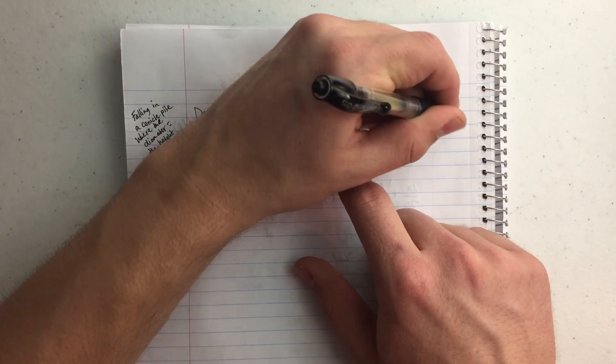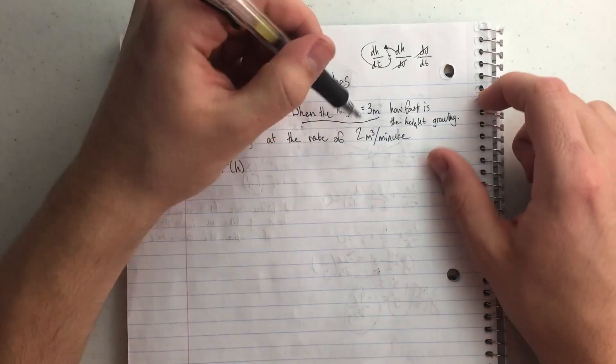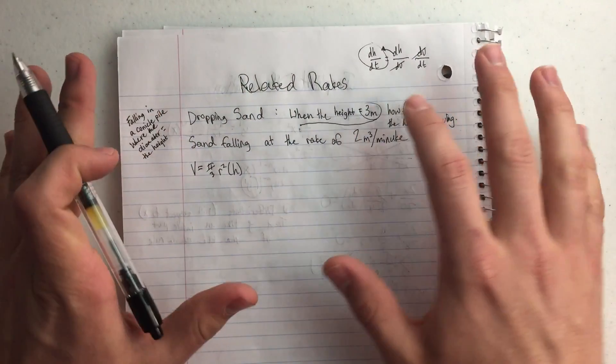So what is the instantaneous rate of that growth of the cone at that point in time when the height equals 3 meters?